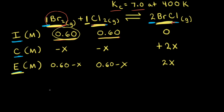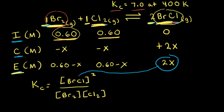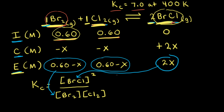The next step is to use the balanced equation to write an equilibrium constant expression. So we write Kc equals the concentration of BrCl squared, divided by the concentration of Br2 raised to the first power times the concentration of Cl2 also raised to the first power. The concentrations in an equilibrium constant expression are equilibrium concentrations. Therefore, we can plug in the equilibrium concentrations from our ICE table: 2x for BrCl, and 0.60 minus x for both Br2 and Cl2.